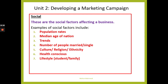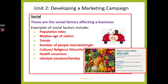Now we're looking at Social — the social factors affecting a business. Examples include population rates, the median age of a nation, certain trends, the number of people married or single, culture, religion and ethnicity, whether a person is health-conscious, and lifestyle. Population rates are a good one — if the population rate is increasing, people are going to demand more goods and services in that country.